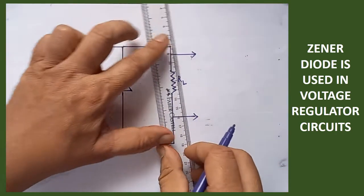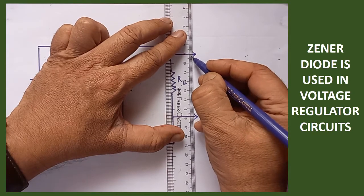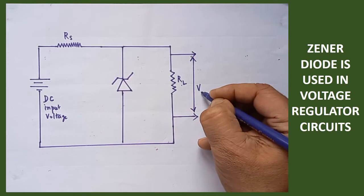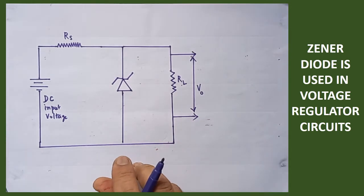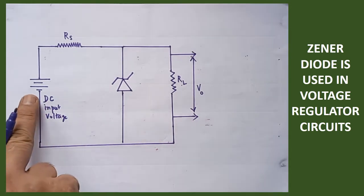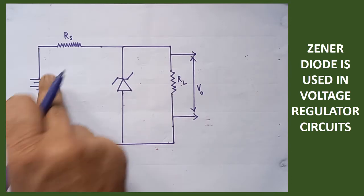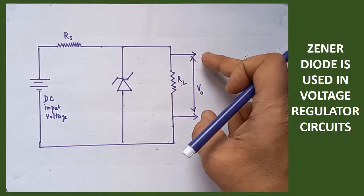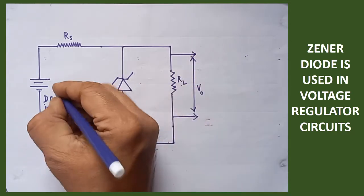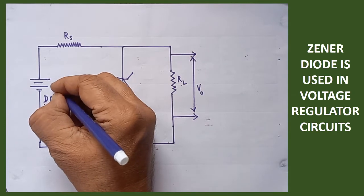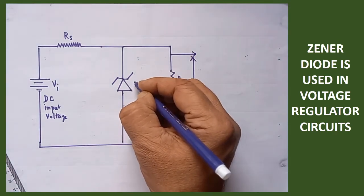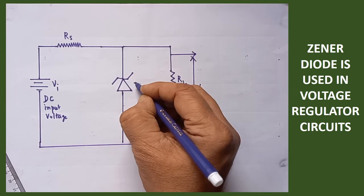Since you are going to get the output across RL, the output voltage is mentioned as VO. You are giving some amount of input voltage into the circuit and you are going to get a constant output voltage. This input voltage can also be called VI. VI is called input voltage. This is the Zener diode — this is nothing but the Zener diode.